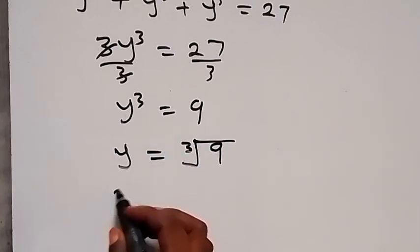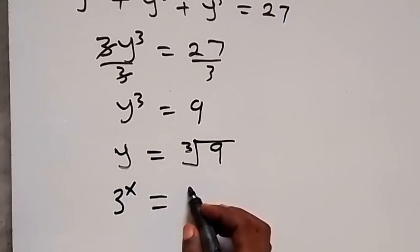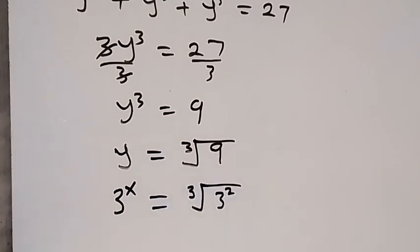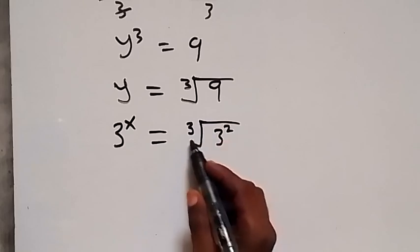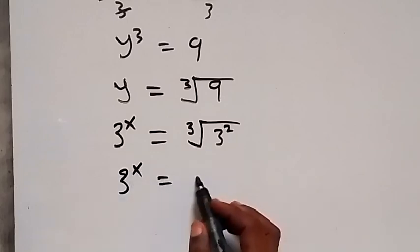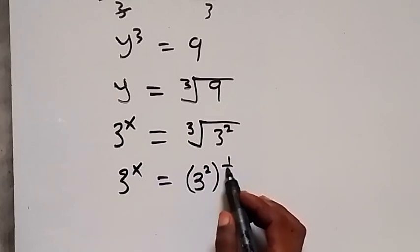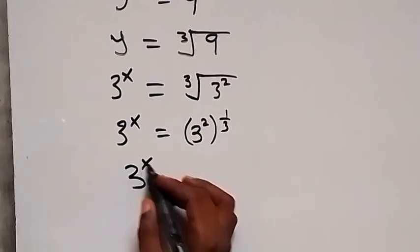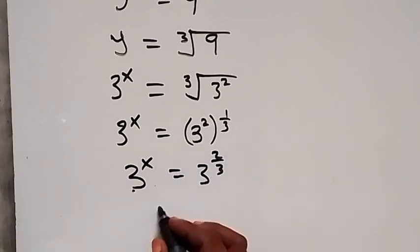Now y is represented as 3 raised to power x, and this equals the cube root of 9. That can be written as the cube root of 3 squared, since 9 is 3 times 3, which is 3 squared. Bringing the cube root as raised to power 1 over 3, we get 3 raised to power x equals 3 raised to power 2 times raised to power 1 over 3. The powers multiply, giving 3 raised to power x equals 3 raised to power 2 over 3.